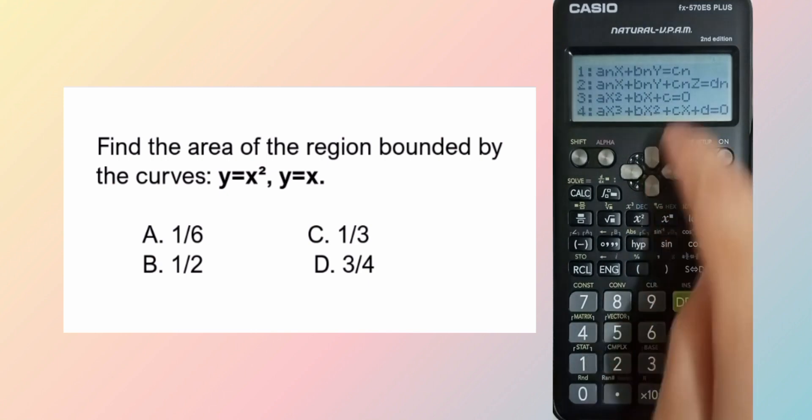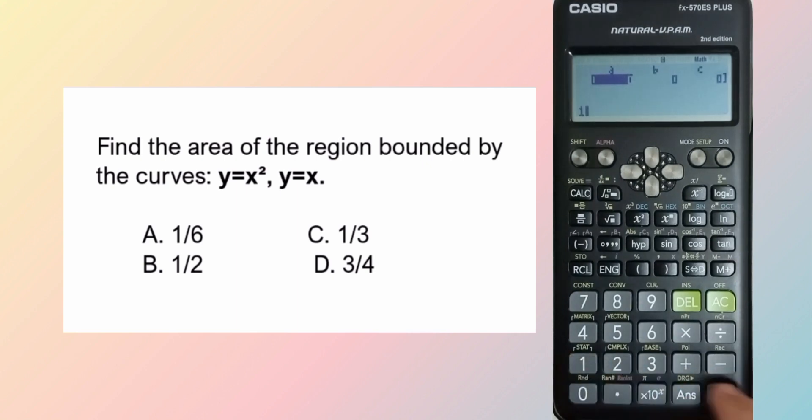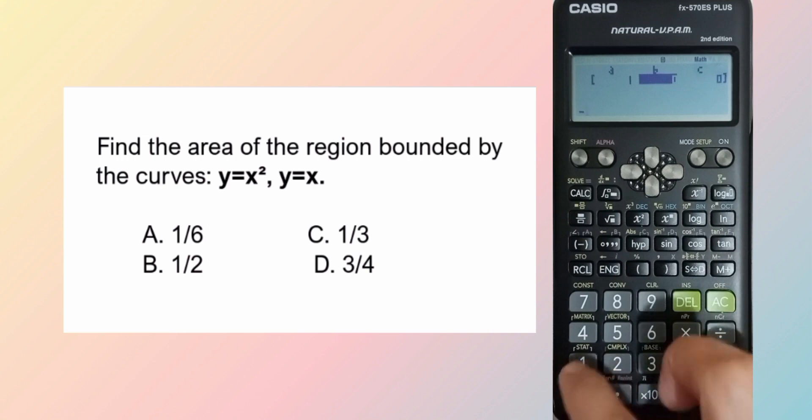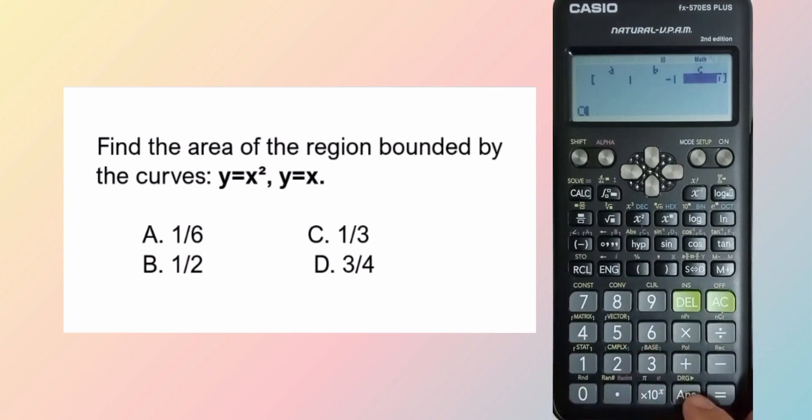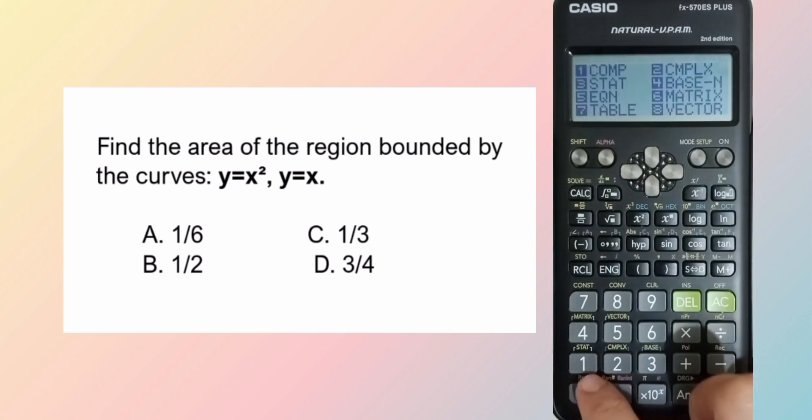Mode 5, 3. 1, coefficient of x squared. Coefficient of x is negative 1 and constant is 0. So limits, 1 and 0. Limits is equal to 1 and 0.